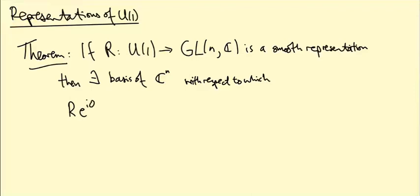with respect to which the matrices are of the following form: R(e^{iθ}) equals e^{im₁θ} going down the diagonal to e^{imₙθ}, and then zeros everywhere else.